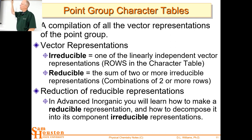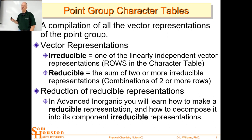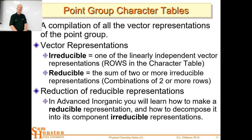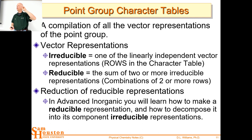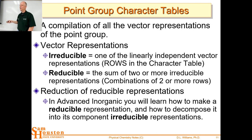An irreducible representation is one of those linearly independent vector representations — the vector is the row of characters in the character table. A reducible representation would be some combination of two or more of those rows. So if I was going diagonal in X, Y, and Z, I would have a combination of three rows and my motion could be reduced to the three directions. In advanced inorganic, you'll actually make reducible representations and learn how to reduce them down to the irreducible representations. For now, we want to move on to how to use the character table.